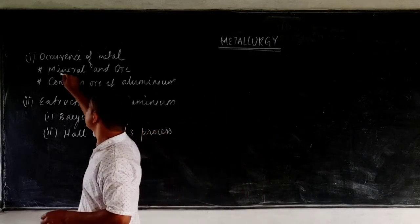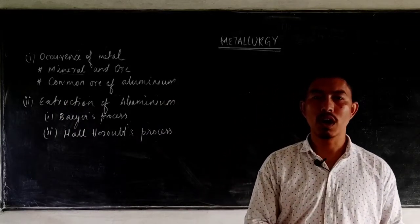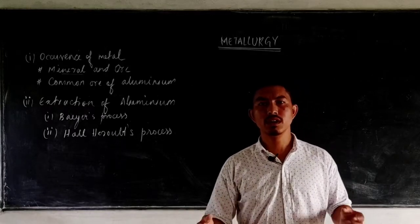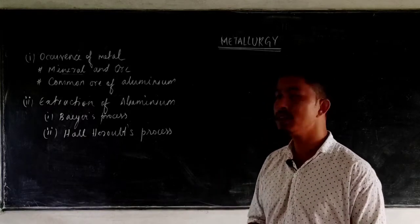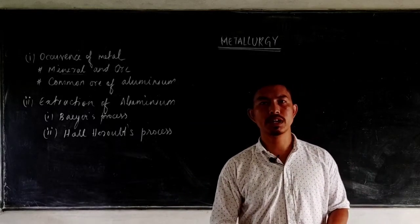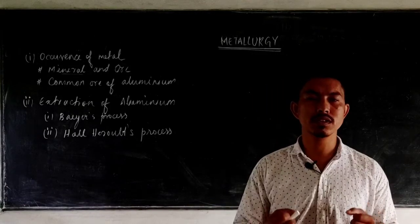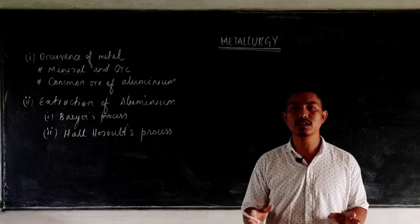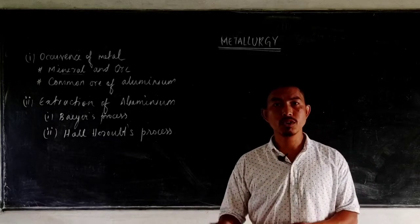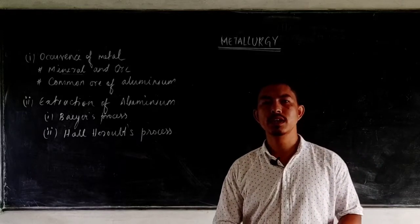Coming to the first one — what is a mineral? A mineral is a naturally occurring substance which contains the metal along with other impurities like sand, mud, silica, and other forms of impurities. We do not directly obtain a metal from minerals because minerals, along with the metal, contain a lot of impurities. So the naturally occurring substance which also contains impurities is known as a mineral.